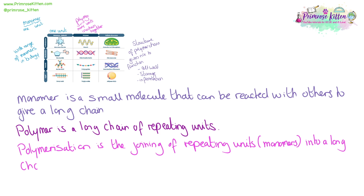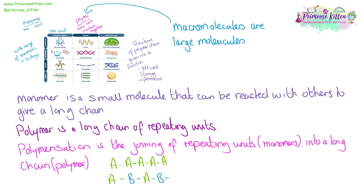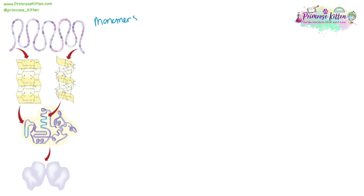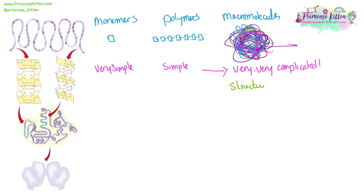Polymerization is the joining together of repeating units or monomers into a long chain or a polymer. Now these can be lots of the same monomers joining together, or these can be different monomers joining together — I don't mean a monosaccharide joining with an amino acid, but you can have one amino acid joining with another amino acid joining with a different amino acid. In biology, a macromolecule is a large molecule, such as a protein. Structures in biology can go from very, very simple, such as a monomer, to polymers, which are slightly more complicated, and when we get to macromolecules, they get very, very complicated. And the structure of the macromolecule needs to be stable, because it needs to have its function specific to its structure.